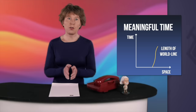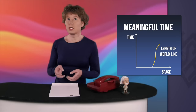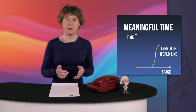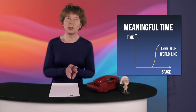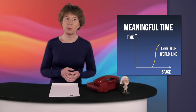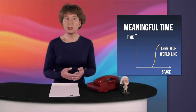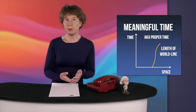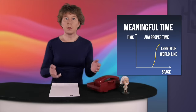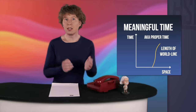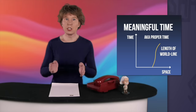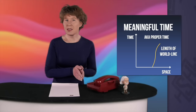The physically meaningful time is the time that passes for an observer. And that time is measured by the length of the world line of the observer — which is just a fancy word for the curve that he or she makes in the spacetime diagram. This physically meaningful time is called the proper time of the observer. So the proper time is the length of the world line, which is the curve of the observer in spacetime.